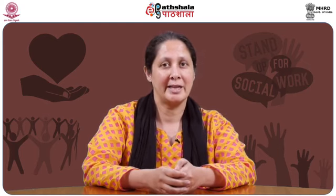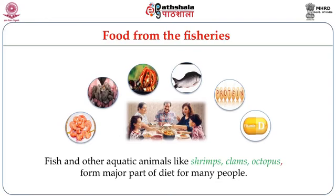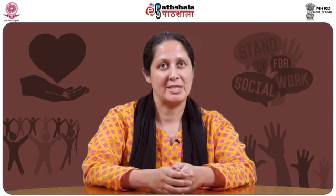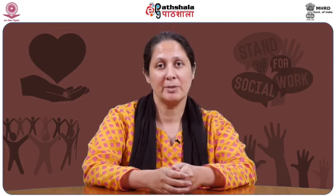Some communities are so highly skilled that they directly use spears or harpoons to kill fish. Fish and other aquatic animals like prawns, shrimps, crabs, clams, and octopus are a large part of diet for many people. They provide proteins, an important component of human development. Fish is a cheap source of protein and can help in avoiding malnutrition in poor communities.